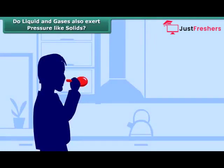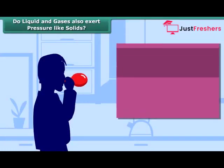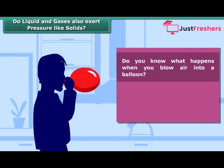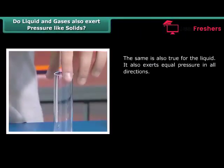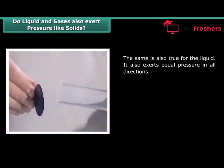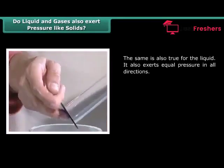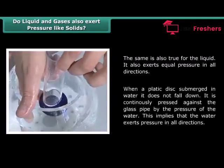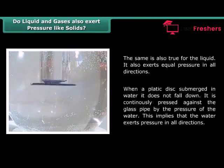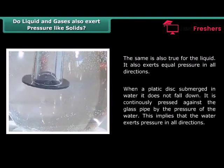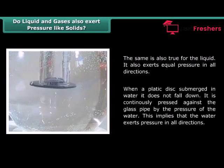Do liquids and gases also exert pressure like solids? When you blow air into a balloon, it exerts pressure in all directions — that's why the balloon increases in size and shows equal enlargement in all directions. The same is true for liquids: they also exert equal pressure in all directions. When a plastic disc is submerged in water, it does not fall down but is continuously pressed against the glass pipe by the pressure of the water, implying that water exerts pressure in all directions.